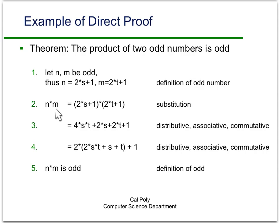Then we form the product, n times m, because that's what we're trying to show. We're trying to show something about the product. And we substitute in for n and m, what we know about them, namely that they're odd numbers. And so what that expression looks like. We multiply that all out and you can verify that that's going to be equal to 4 times s times t plus 2 times s plus 2 times t plus 1. And that uses the distributive law, the associative law, and the commutative law for multiplication and addition.